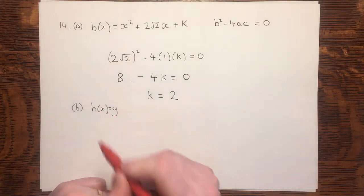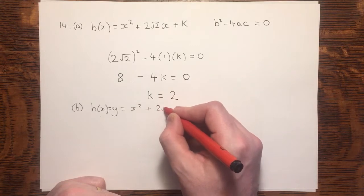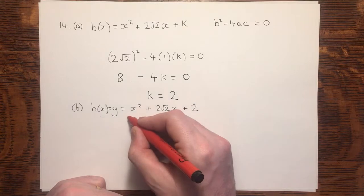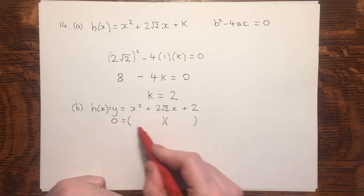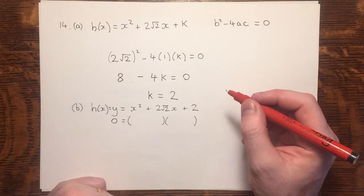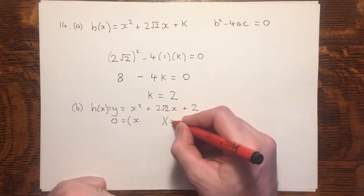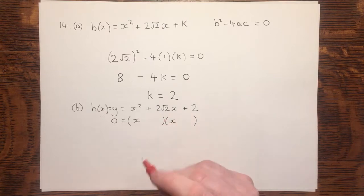We know that we're now equating this to y, and we know that k equals 2. We need to factorize this, and since we're looking for the x-intercept, the y-value will be zero. Bearing in mind that we know this is a repeated root, these two brackets should be the same. I need two numbers that will multiply to give me 2 and will add up to give me 2√2.